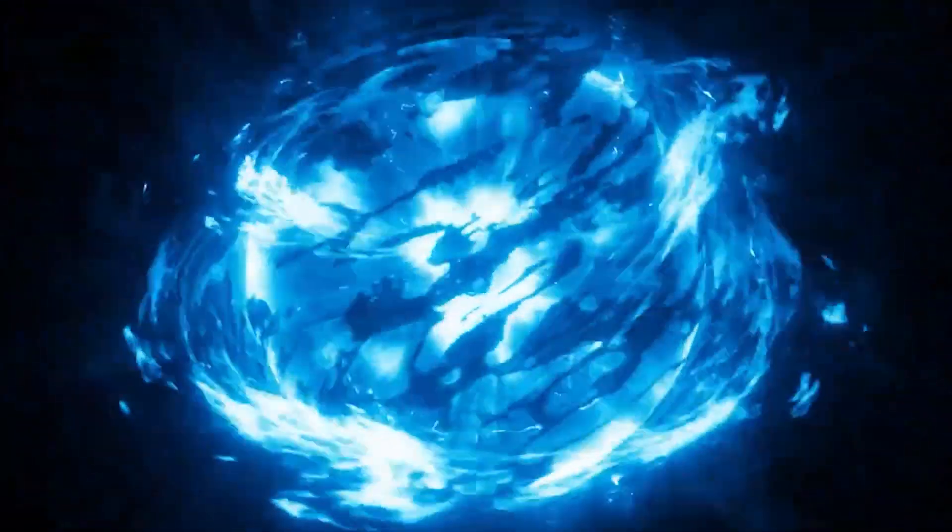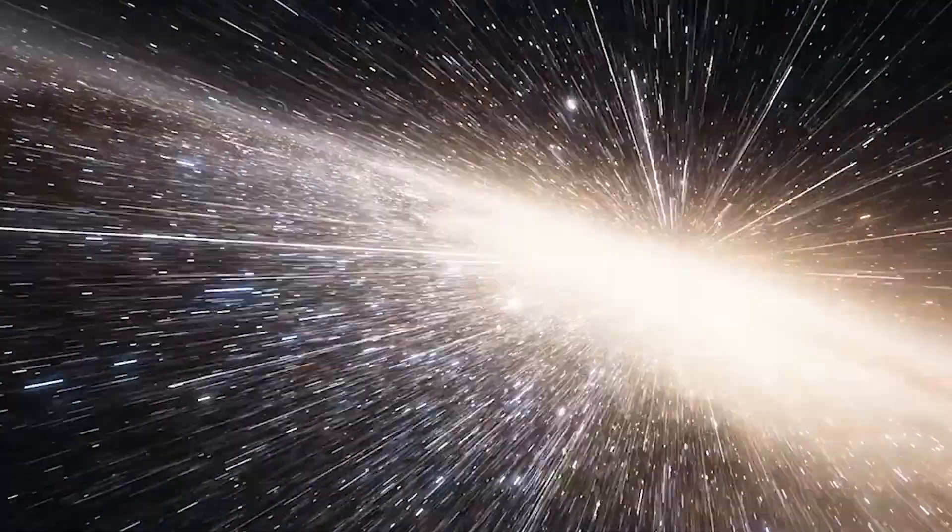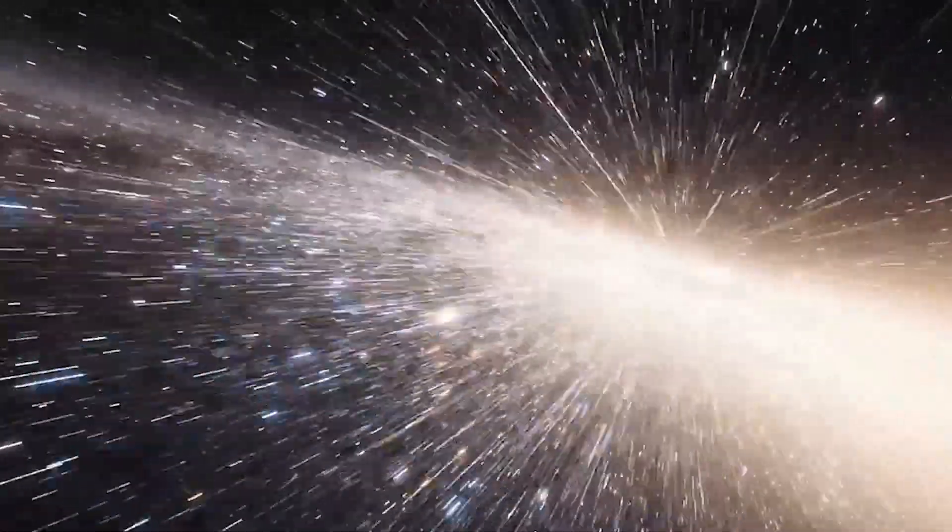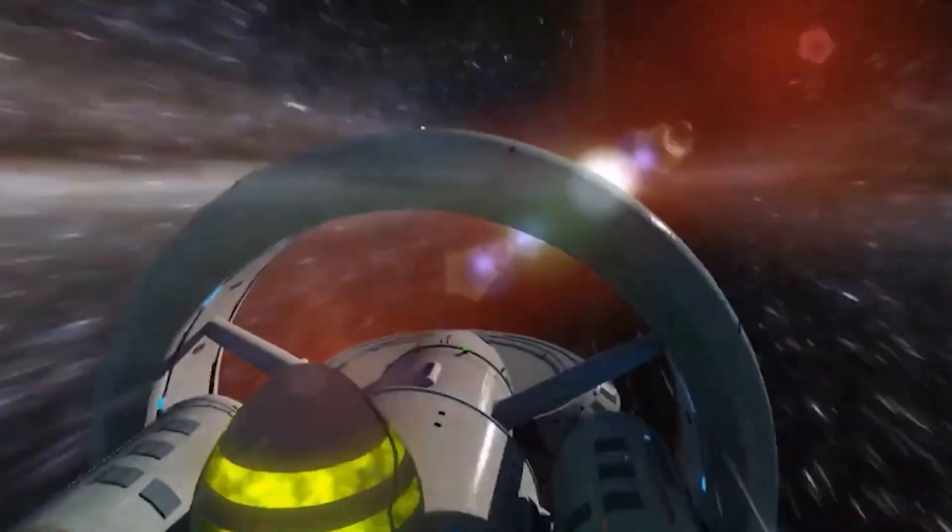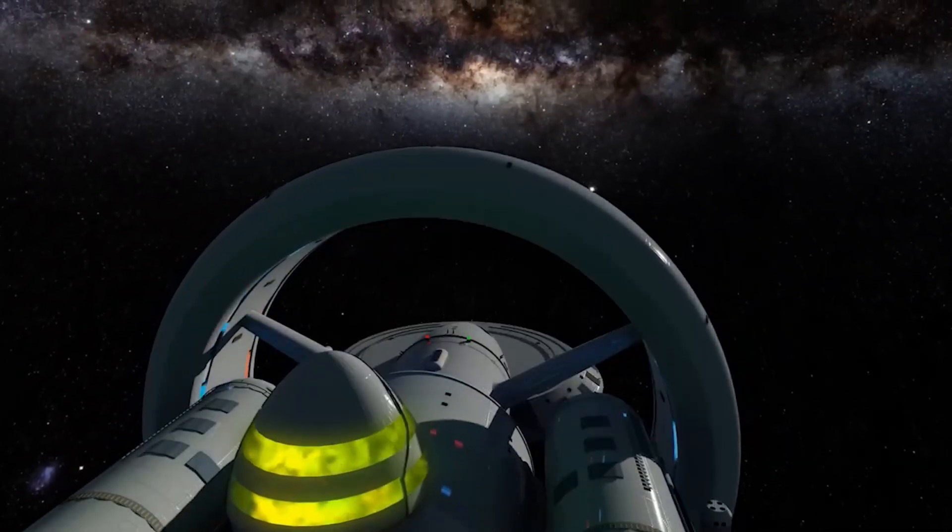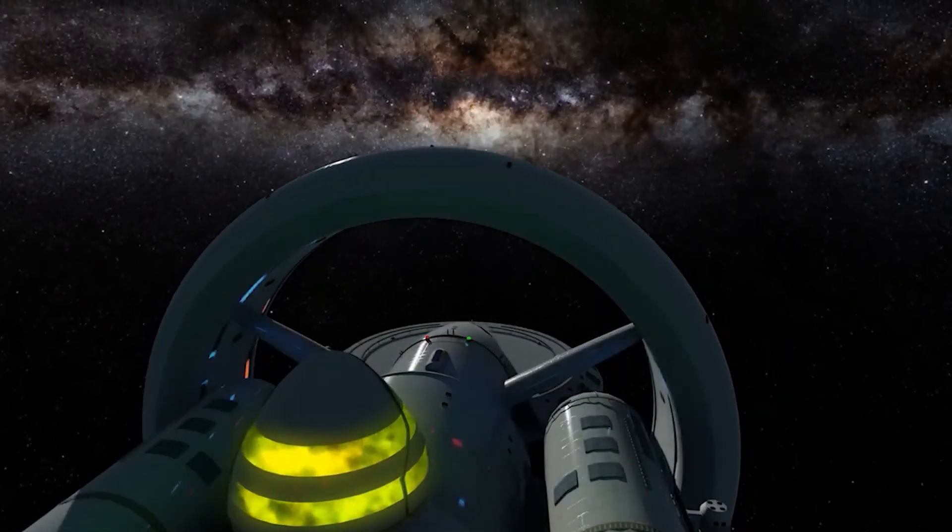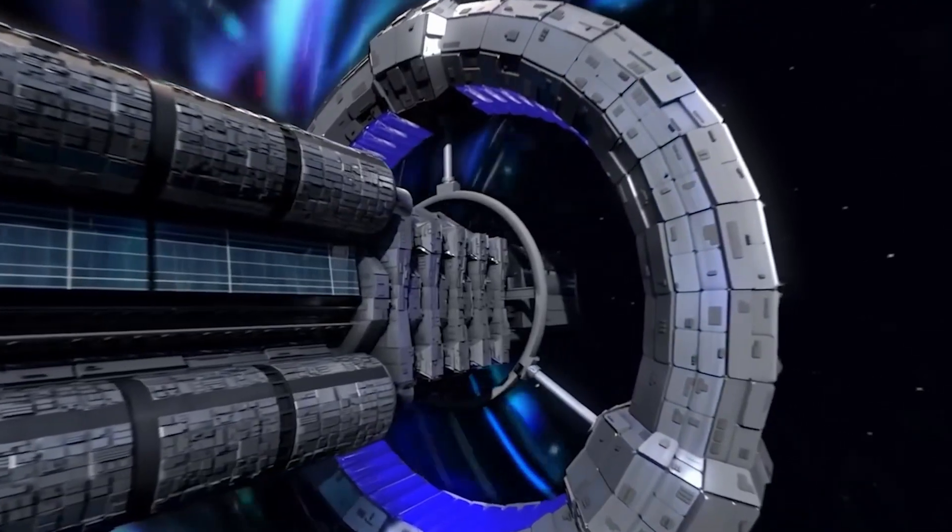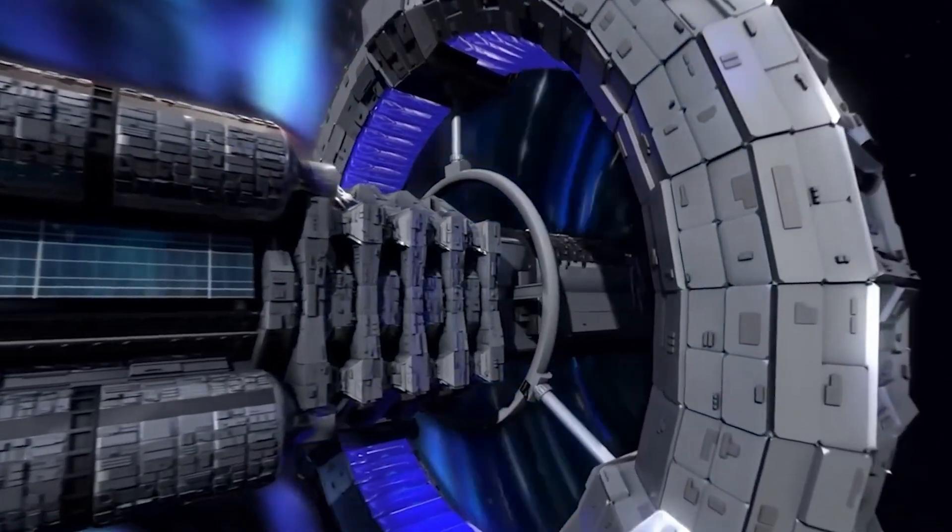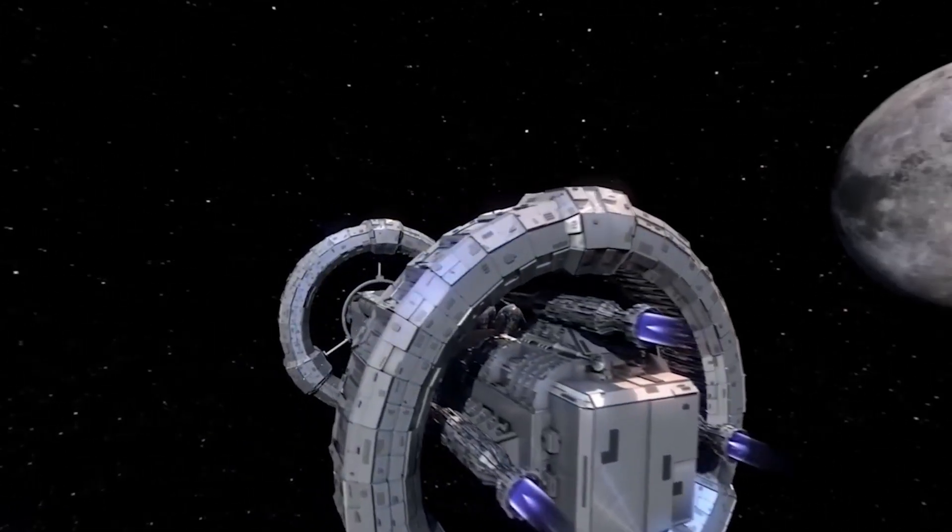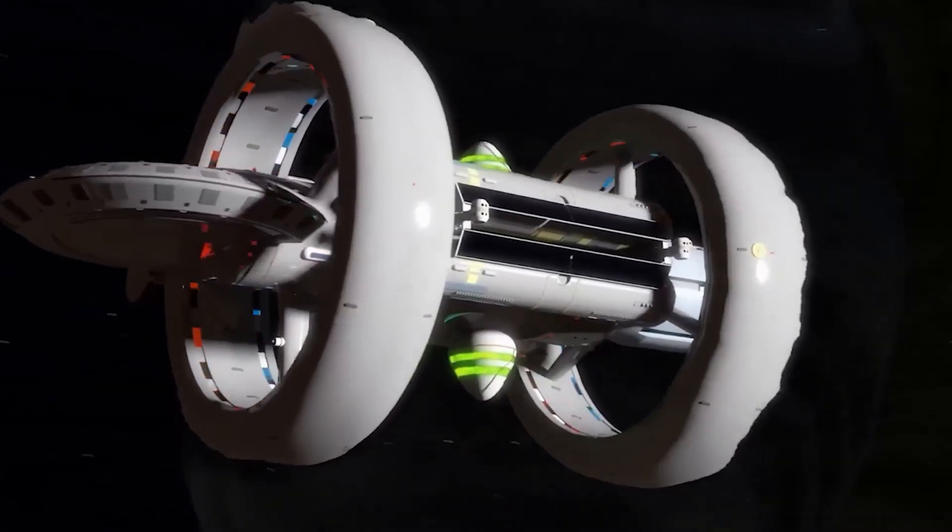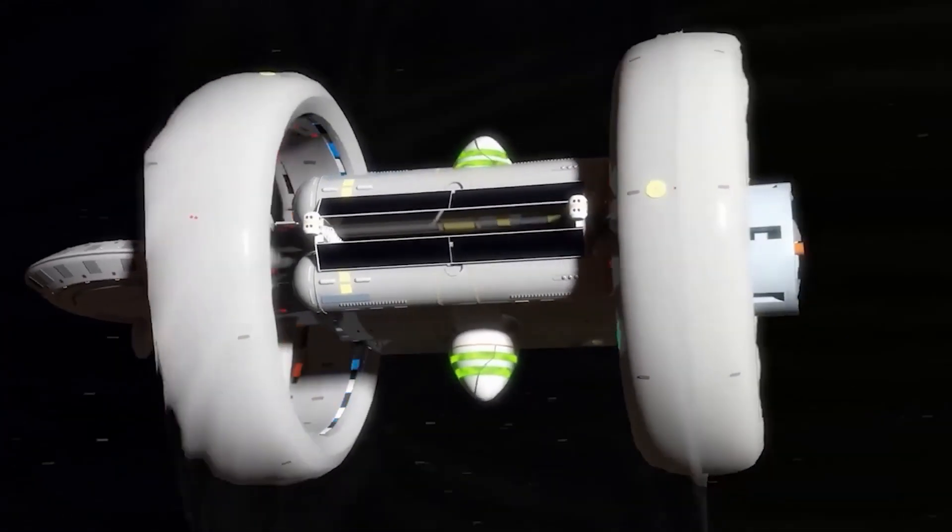But for the warp drive to generate enough negative energy, we'd need a lot of matter. Alcubierre calculated that a warp engine with a 100-meter bubble would require the mass of the entire visible universe. But physicist Chris Van Denbroek showed that increasing the volume inside the bubble while keeping the surface area constant would greatly reduce the energy requirement to about the mass of the sun. A significant improvement, but still far beyond all practical possibilities.